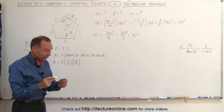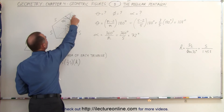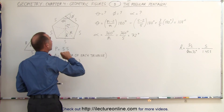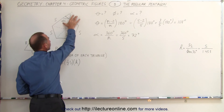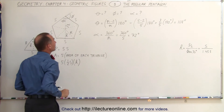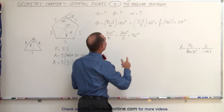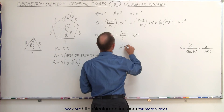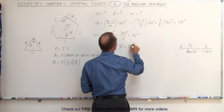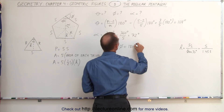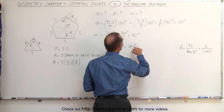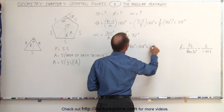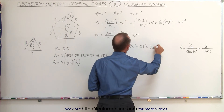All we have left to do is find the angle phi, which is supplementary to theta. Two supplementary angles must add up to 180°, so phi = 180° − 108° = 72°.